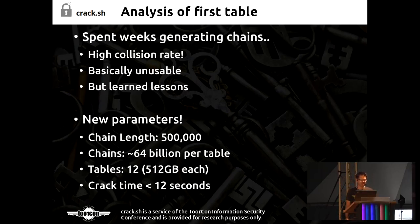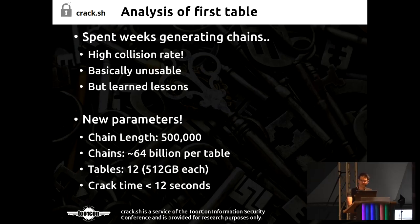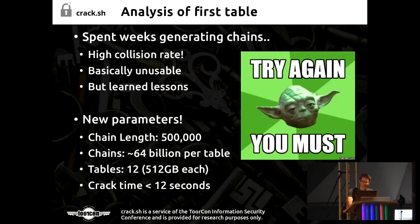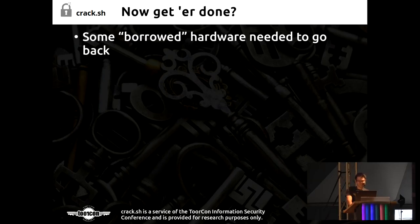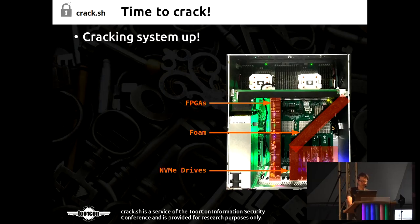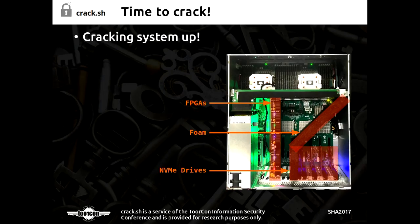We came up with new parameters. Because of the collisions we had to pare down our ambitions: we went to 12 tables instead of three, which increased our crack time to closer to 12 seconds — still reasonable. Then the borrowed hardware had to go out to customers, so we returned some of it and spent a few more weeks generating tables. Now we have our cracking system up.